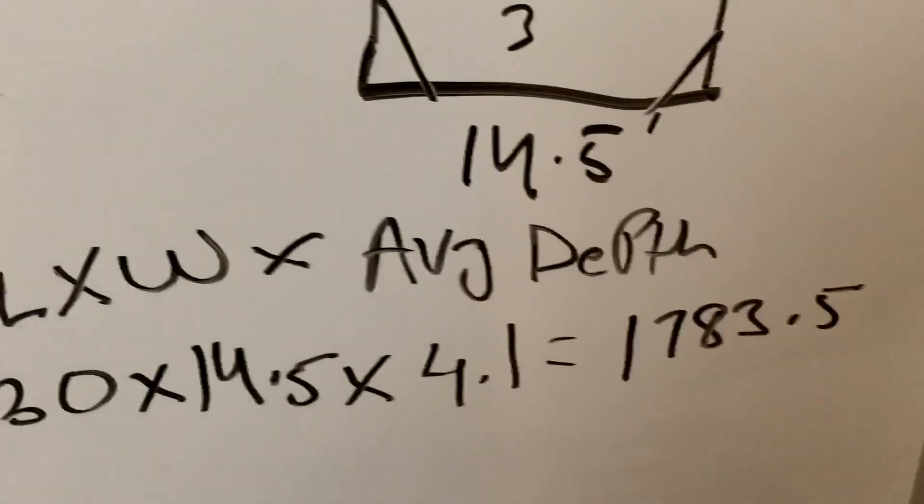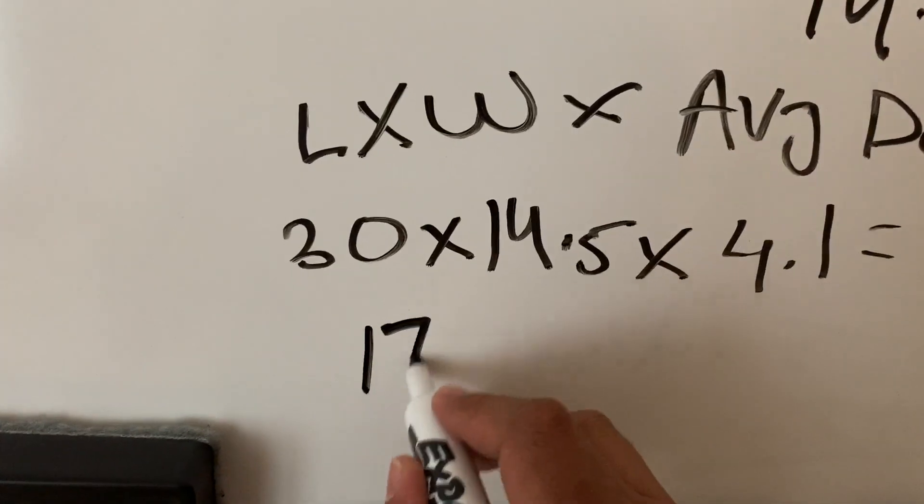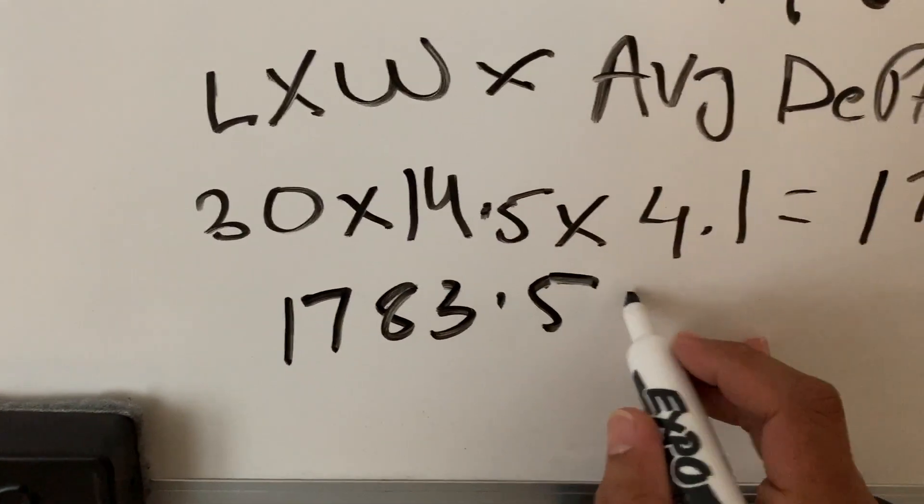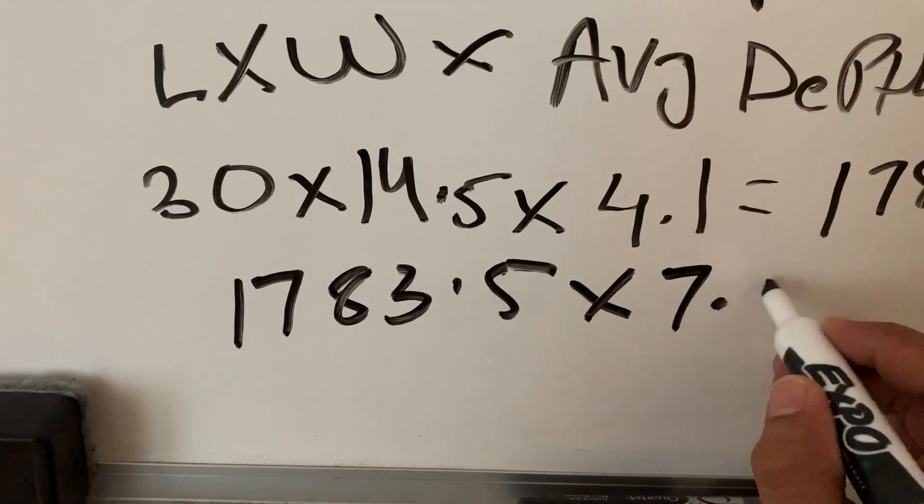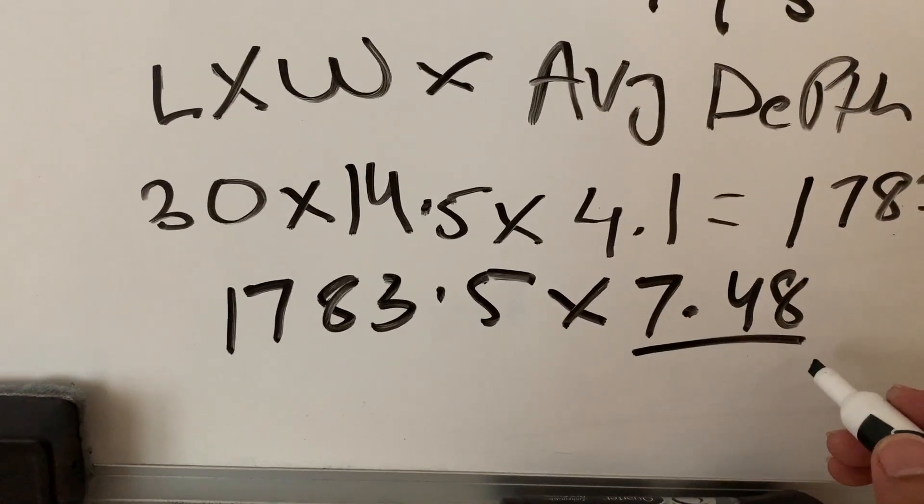Then you're gonna take this number, so in my case 1783.5, and times that by 7.48. Now, the 7.48 is the gallons in one cubic foot.